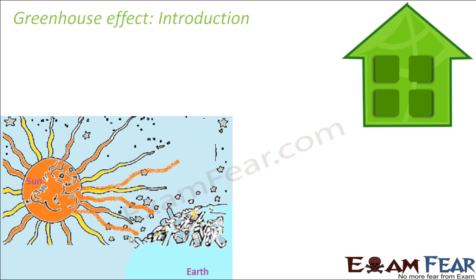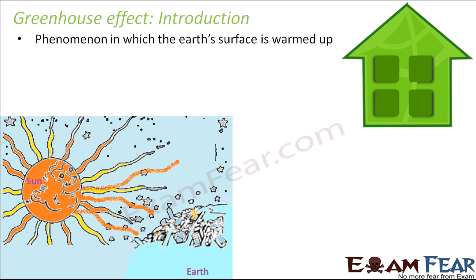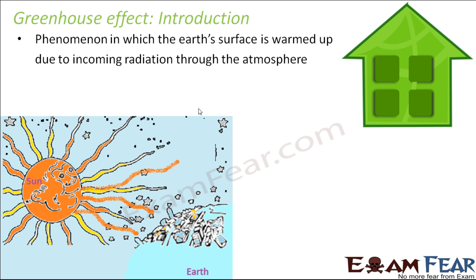The atmosphere plays a very important role in maintaining the temperature of earth. The greenhouse effect is a phenomenon in which the earth's surface is warmed due to incoming radiation through the atmosphere. The atmosphere is like a special blanket around the earth — it allows incoming solar radiation to enter inside the earth, but it does not allow all of it to go out. As a result, some of the radiation gets trapped within the earth, and due to this trapping, the earth's temperature increases. This warming up of the earth is known as the greenhouse effect.